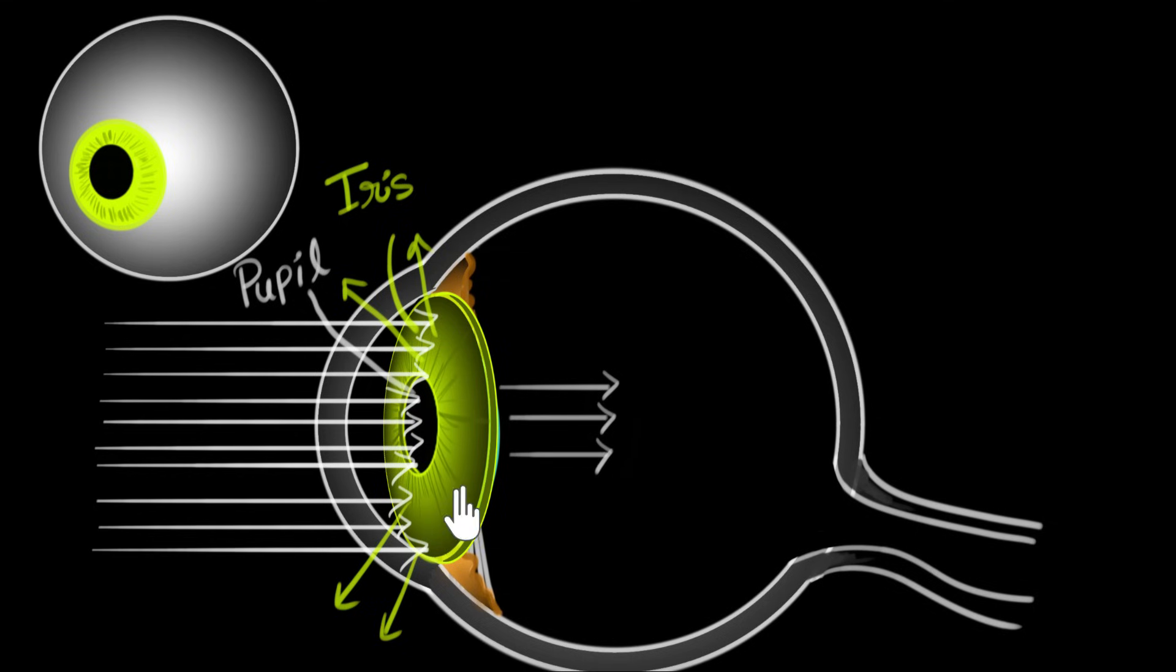Now our iris has a very important job. Its job is to control the size of this pupil, the hole. And that's because during the daytime or when the ambient lighting conditions are very bright, then there are a lot of rays of light that are hitting our eyes.